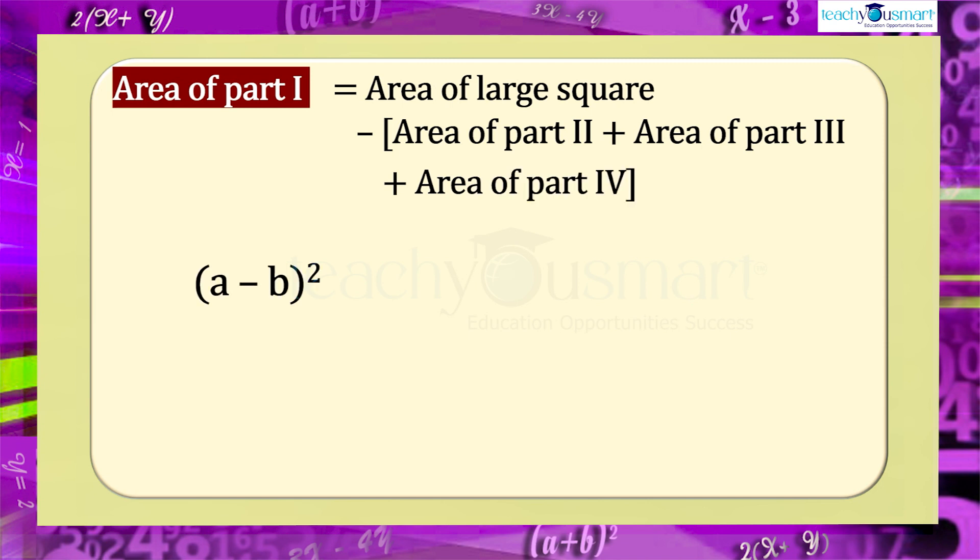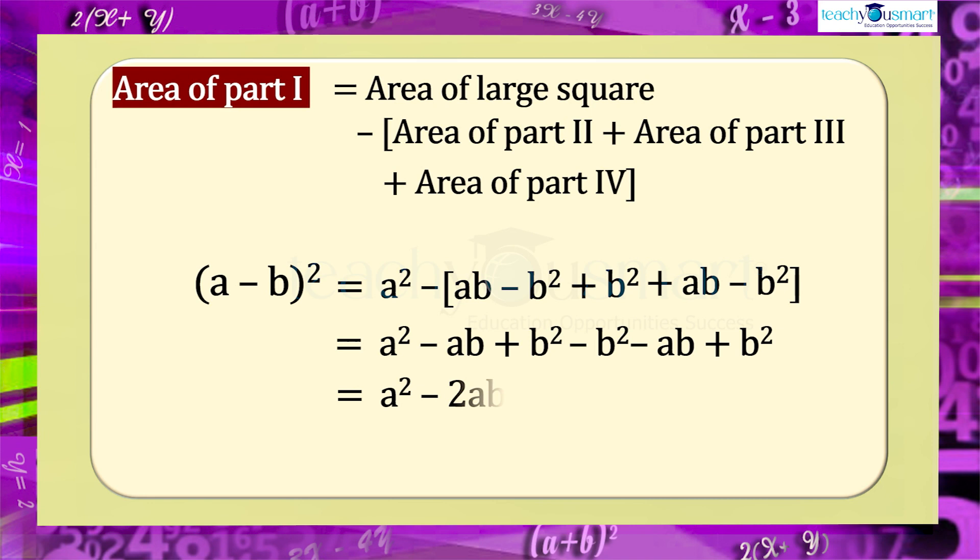That is, (a minus b) whole square equals a square minus (ab minus b square) plus b square plus (ab minus b square), which equals a square minus 2ab plus b square.